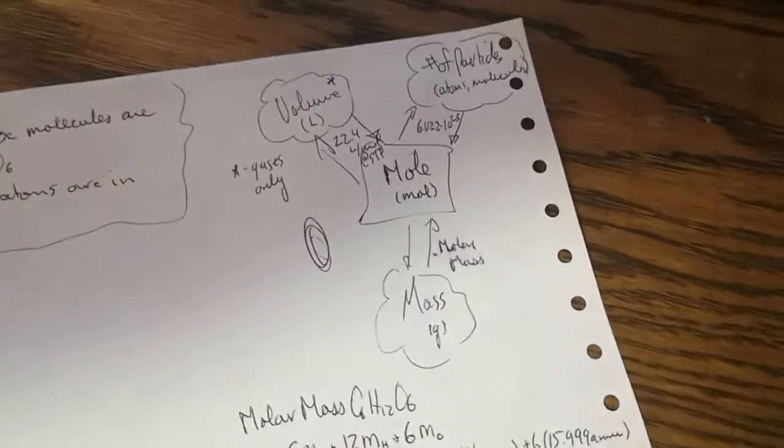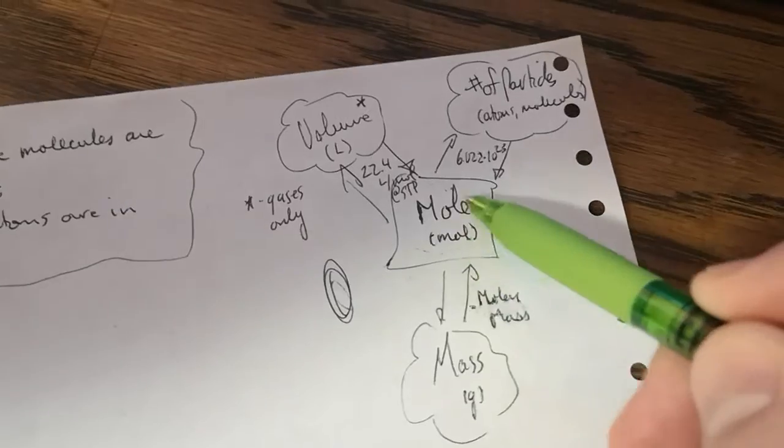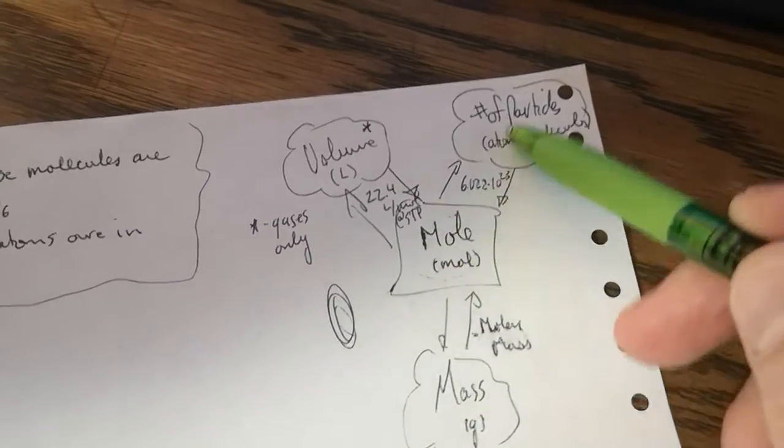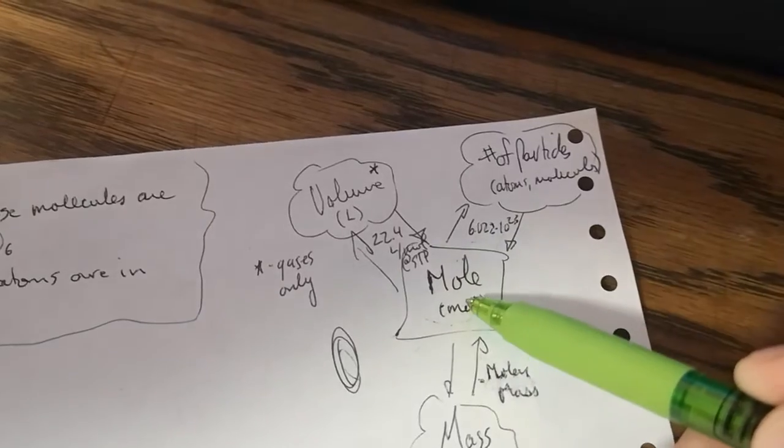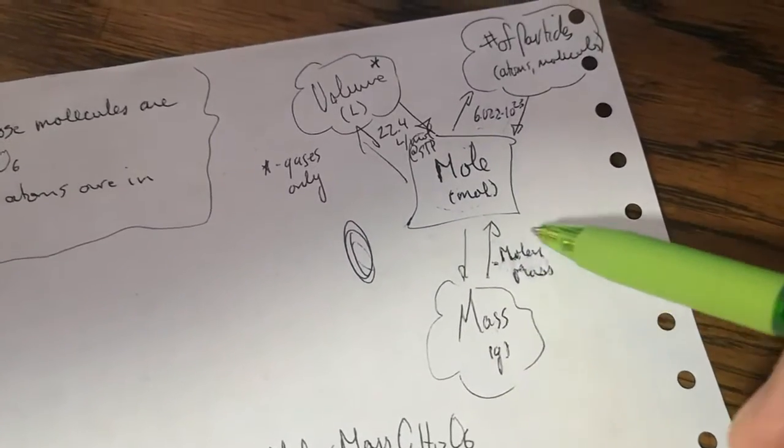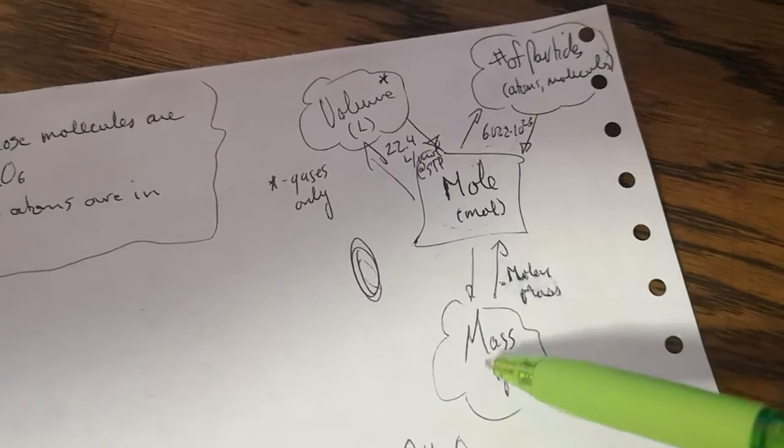I've sketched a simple graphic organizer to identify that mole is known as the central unit of chemistry, that to convert back and forth to number of particles requires Avogadro's number. For mole to be converted to mass, we need the molar mass of that particular substance.